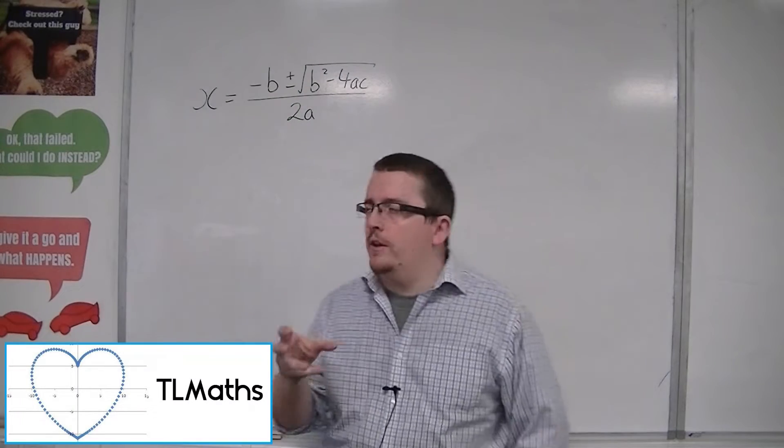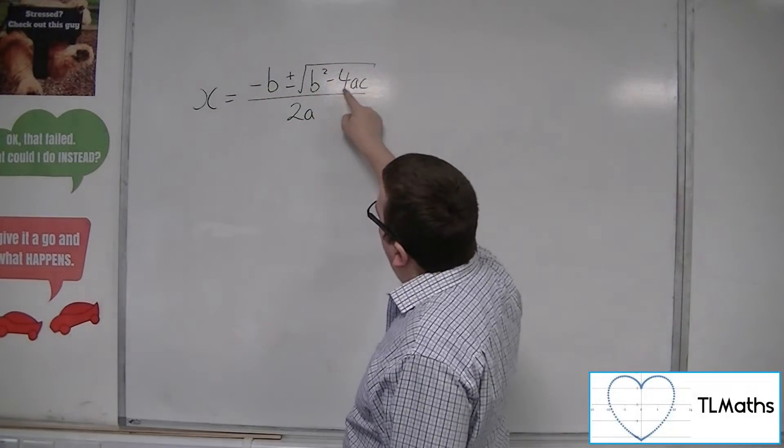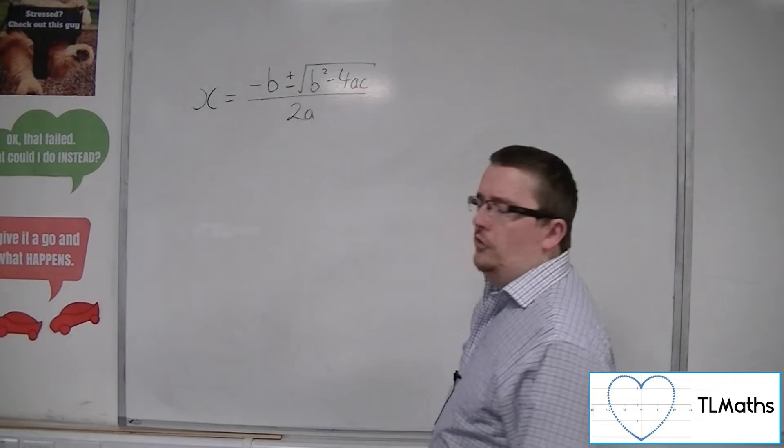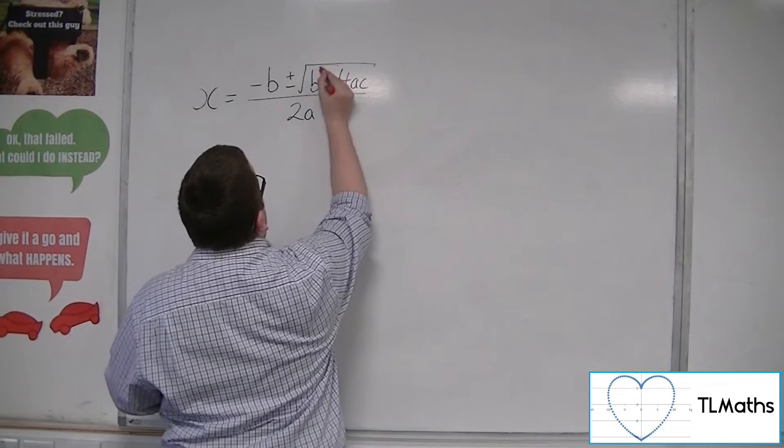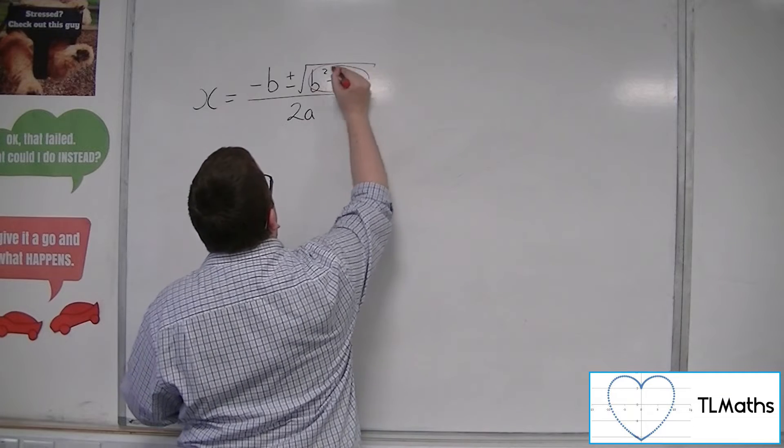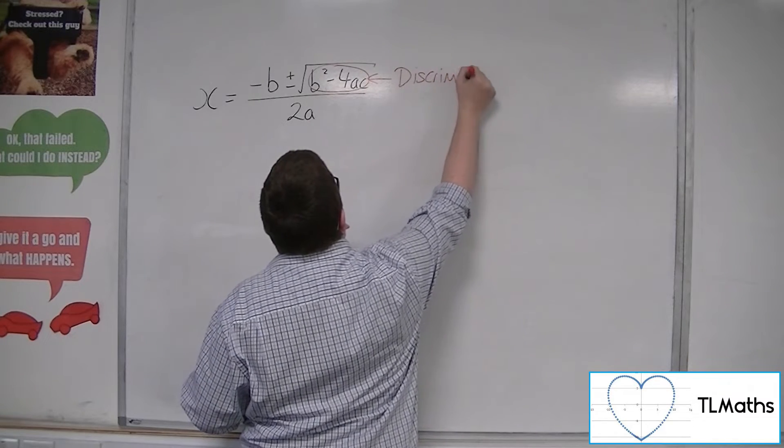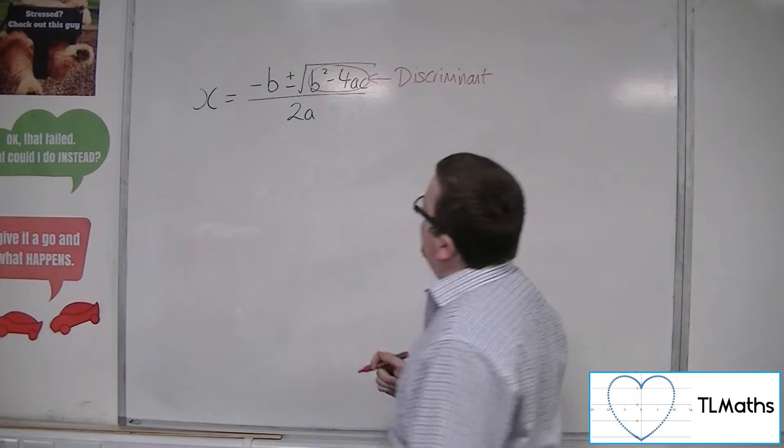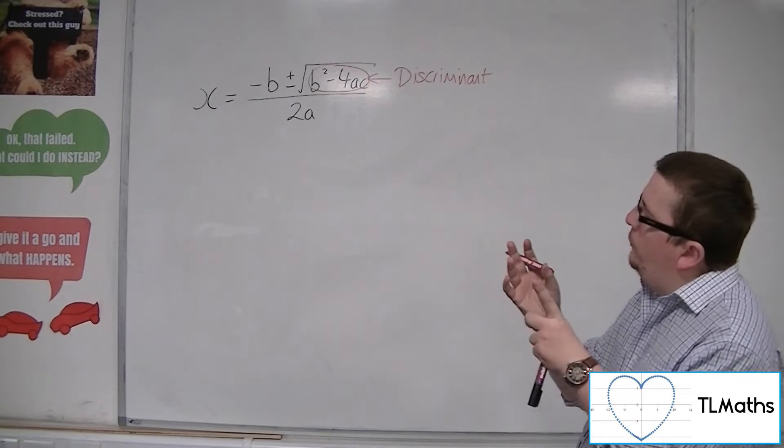Within the quadratic formula is this very important part of it, this b squared minus 4ac. This bit here we call the discriminant. So it doesn't include the square root, it's just what's within that: b squared minus 4ac.